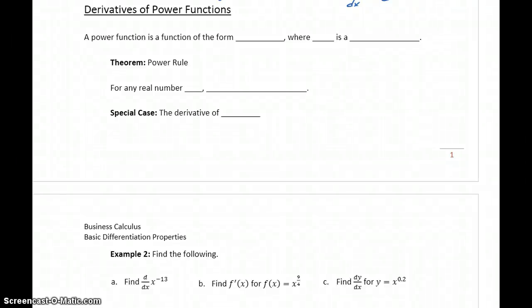The next function we want to look at differentiating is a power function. So a power function is a function of the form x to the n, where n is some real number. So this could be x squared, x to the negative fifth, x to the one half, so x raised to any power.